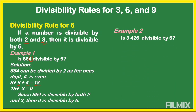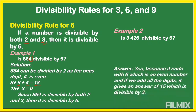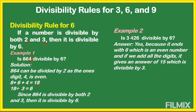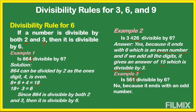Another example: is 3,426 divisible by 6? It ends with 6, which is an even number. Adding all the digits: 3 plus 4 is 7, plus 2 is 9, plus 6 is 15, which is divisible by 3. So 3,426 is divisible by 6. Another example: is 561 divisible by 6? It ends with 1, which is an odd number — not an even number — so it is not divisible by 6.